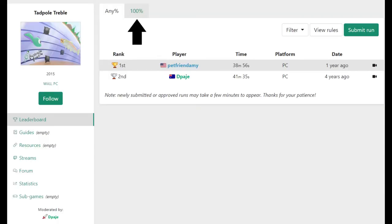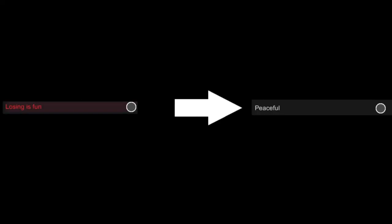in the 100% category, it could prove useful to employ this glitch against the secret boss, as its difficulty can be greatly reduced using this glitch.